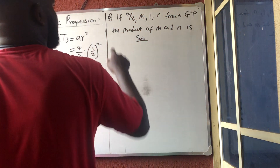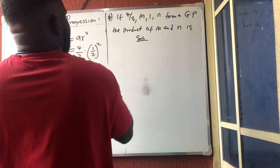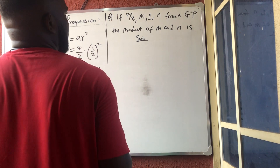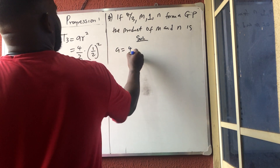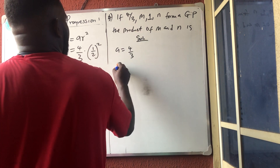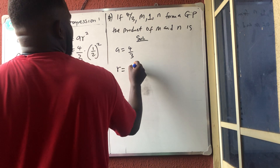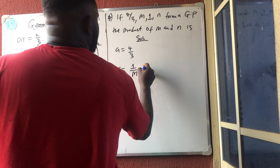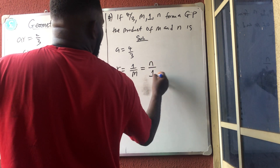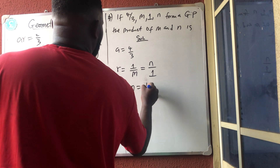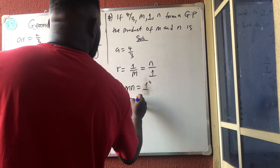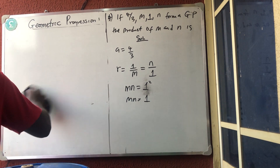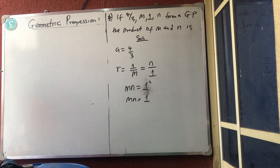Sorry for the interruption. The question is 4/3, m, 1 — that's one, not l — comma n. So my first term is 4/3. To find r, I use the fourth term divided by the third term, which equals the third term divided by the second term. So n divided by 1, and cross-multiplying gives mn = 1² = 1. So mn = 1. Simple question — I just misread the 1 as an l.